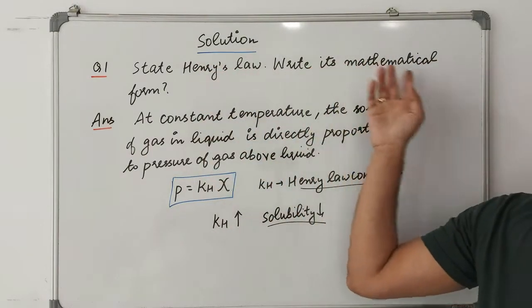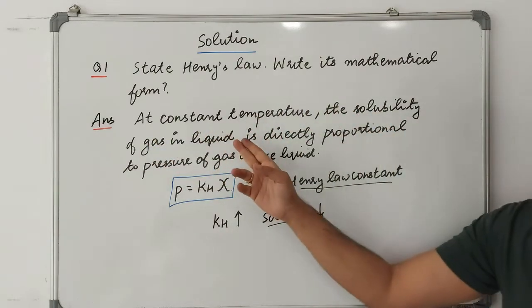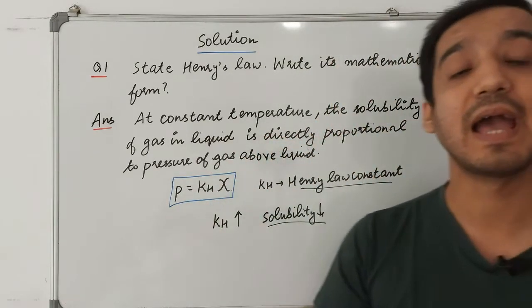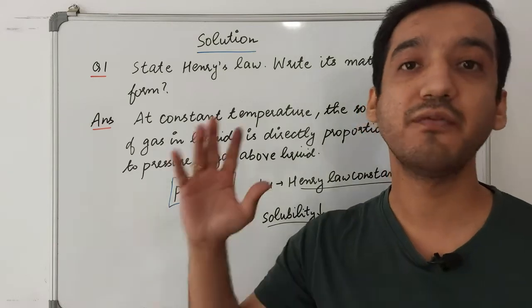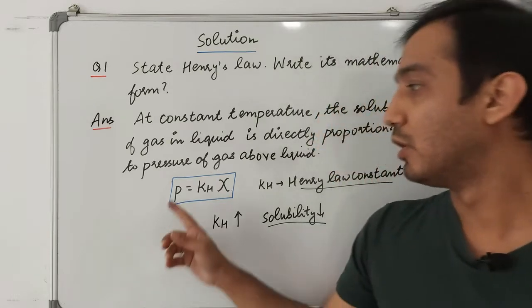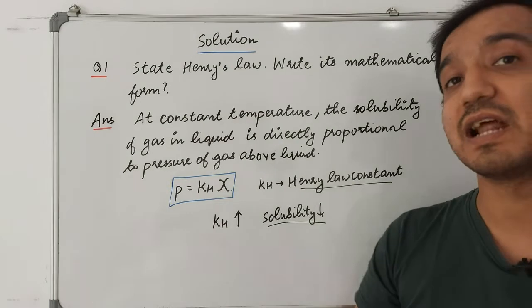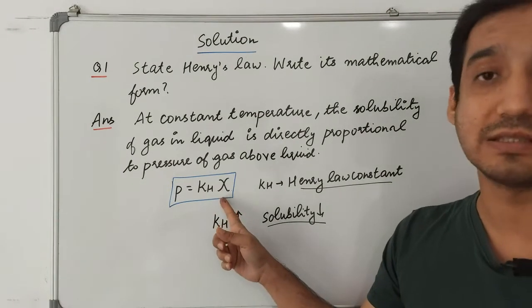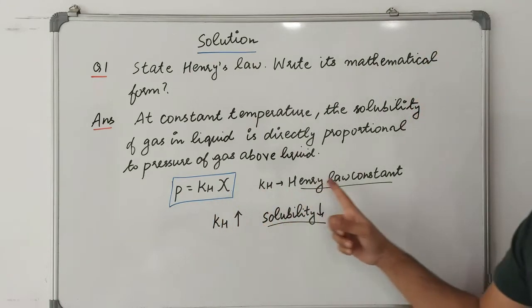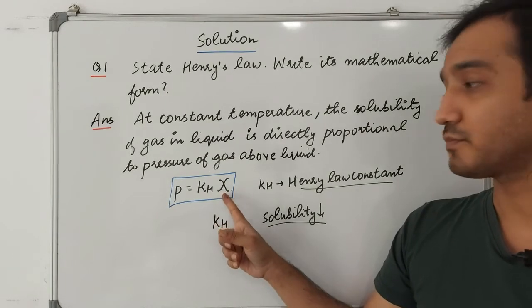Question 1: State Henry's Law and its mathematical form. At constant temperature, the solubility of a gas in a liquid is directly proportional to the pressure of the gas above the liquid. If you have high pressure of the gas, more gas will get dissolved. So partial pressure is directly proportional to the mole fraction of gas in the solution, with a constant kH called Henry's Law constant.